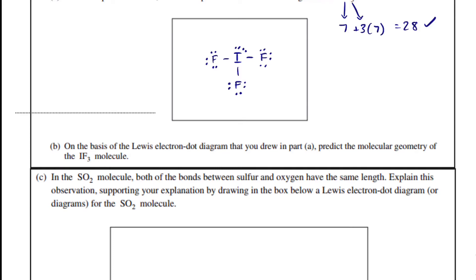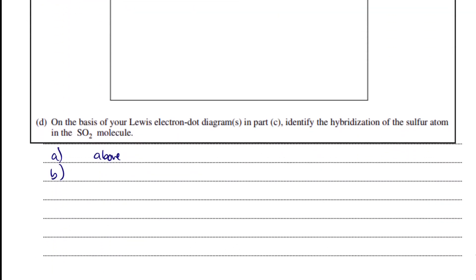So, you need to know your VSEPR chart. Three things bonded with two lone pairs, that is definitely going to be T-shaped planar.